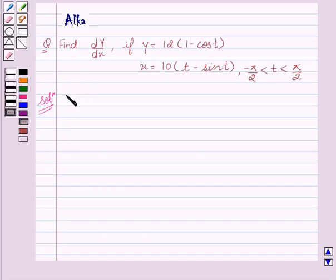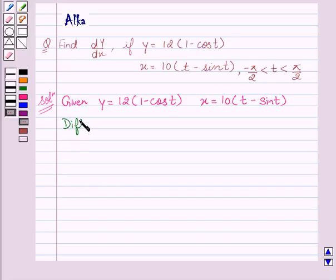We are given y equal to 12 into 1 minus cos t and x equal to 10 into t minus sin t. Let's differentiate both sides with respect to t.